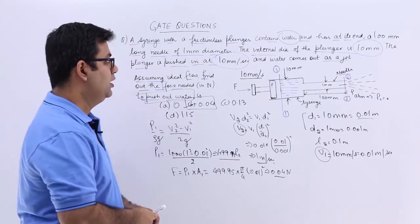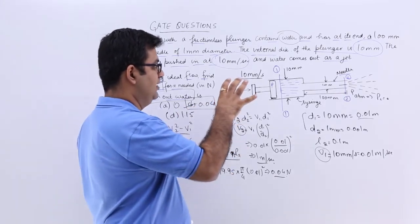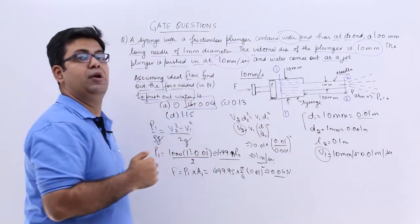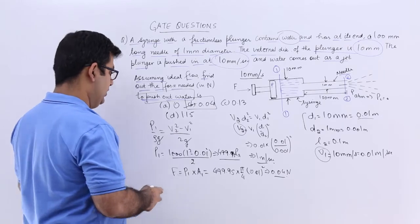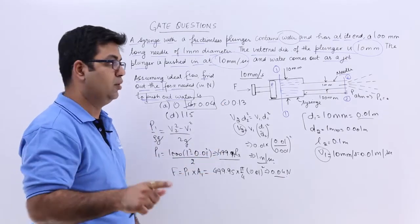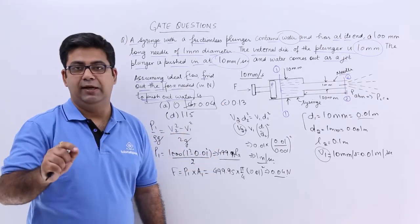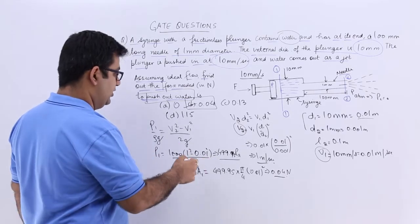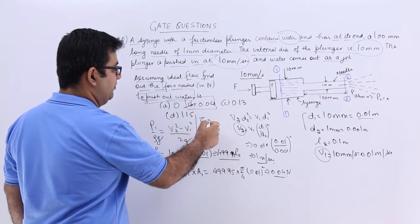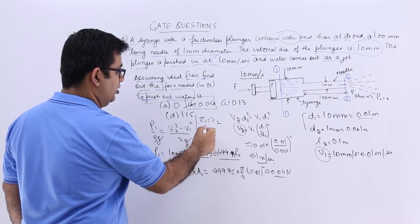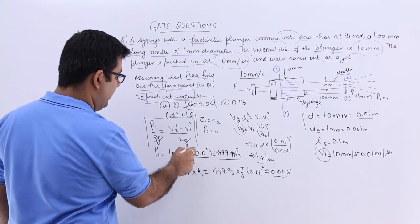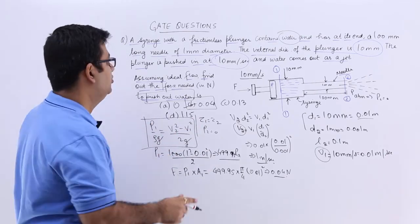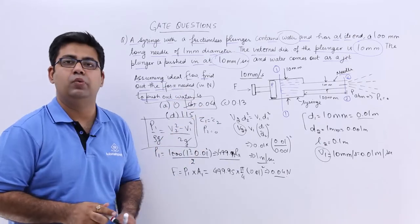Look at it as a setup which is given to you in which we can apply Bernoulli's equation. And then once you write down Bernoulli's equation, look at what all terms can be neglected or cancelled out. So it is very clear that your datum would be same, your pressure 2 becomes 0. So you are only playing with P1, V1 and V2. So I hope you got this. Now let's move on to question number 3.